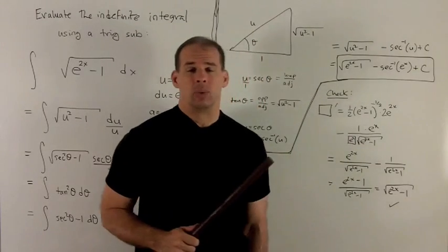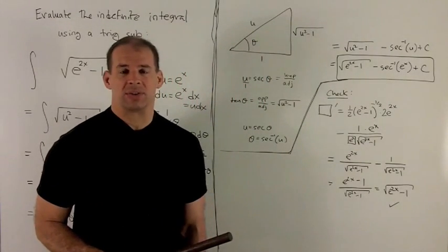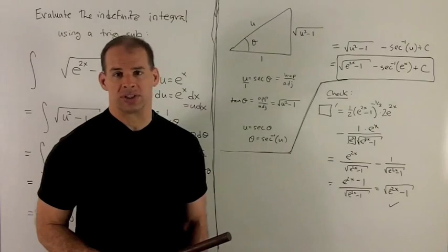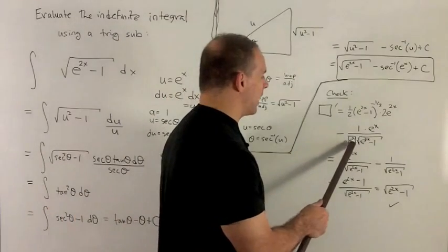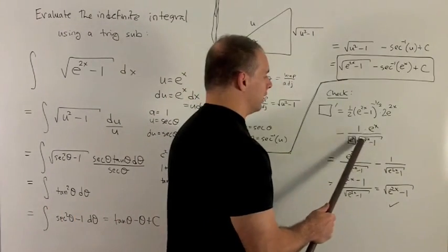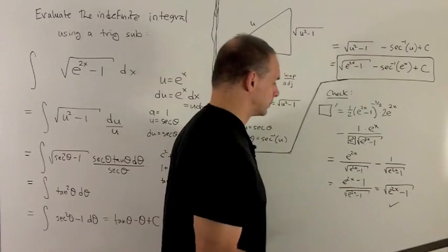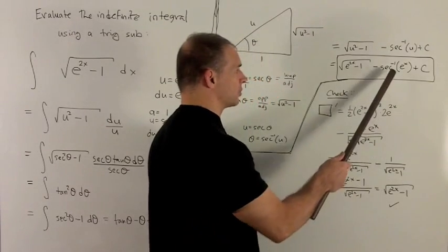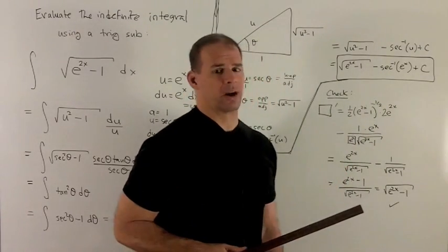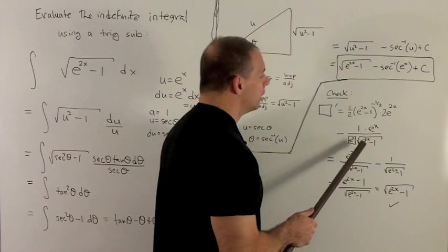Absolute value of e to the x, well, e to the x is always positive, so the absolute value signs don't exist. So we just get e to the x here, then we have radical e to the 2x minus 1. You may need to look up this derivative if it's not right there off the top of your head.